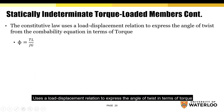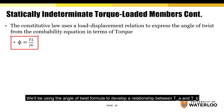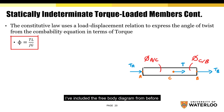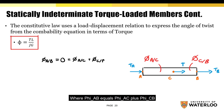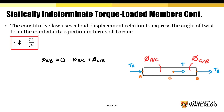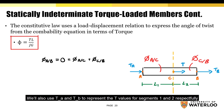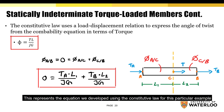The constitutive law uses a load-displacement relation to express the angle of twist in terms of torque. In other words, we'll be using the angle of twist formula to develop the relationship between TA and TB. We'll also need the compatibility equation from the previous slide, where phi_AB = phi_AC + phi_CB. We'll use L1 to represent the longitudinal distance from point A to C, and L2 to represent the longitudinal distance from point C to B. We'll also use TA and TB to represent the T values for segments 1 and 2 respectively. As a result, we'll end up with the corresponding equation that represents the constitutive law for this particular example.